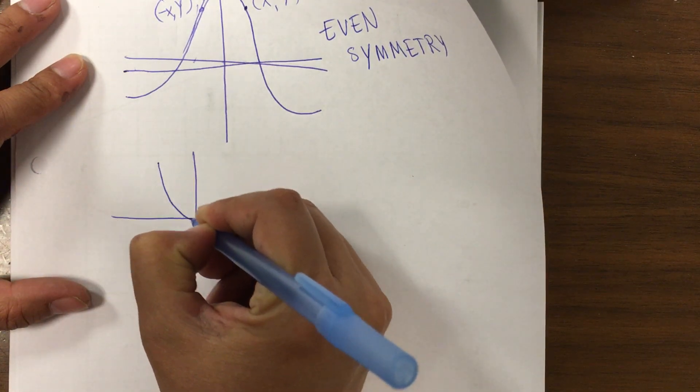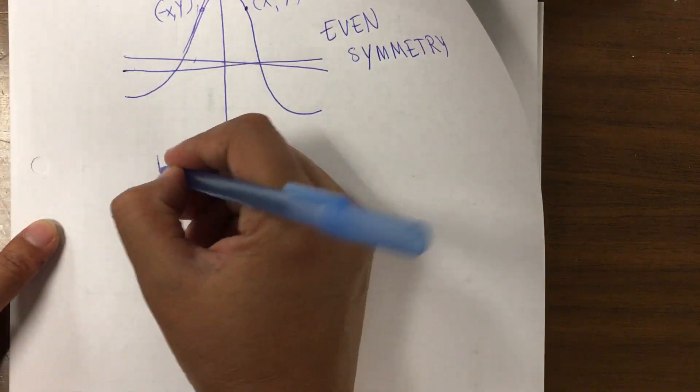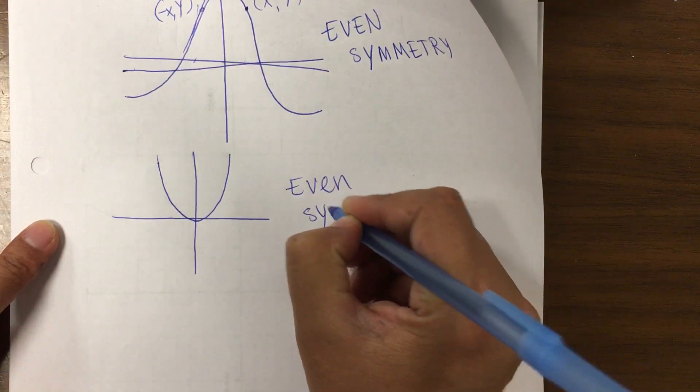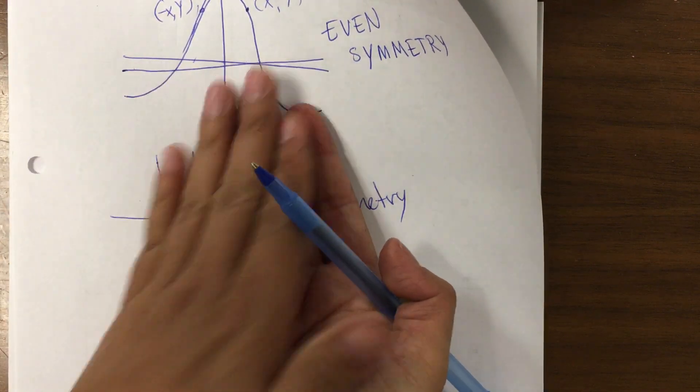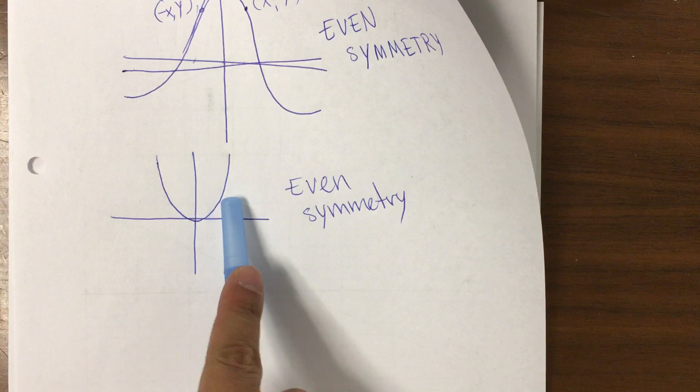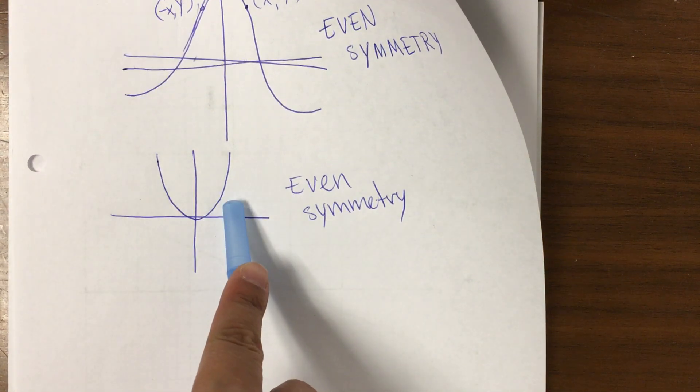Parabolas are also symmetric and they have even symmetry. Why? Because you can fold it, and then they are a reflection of each other.